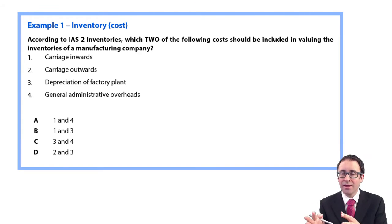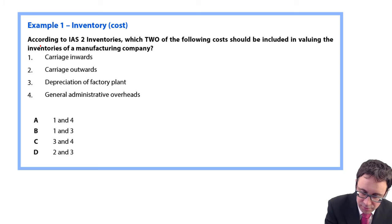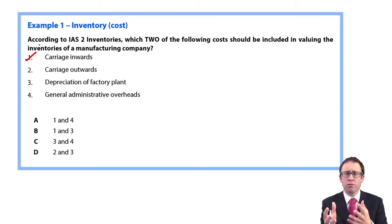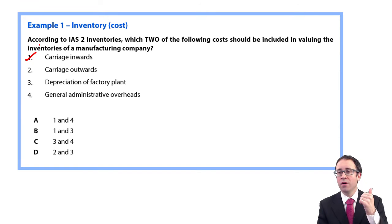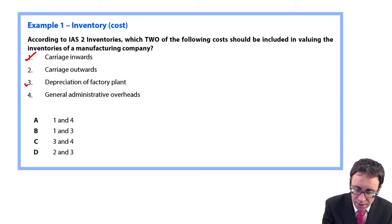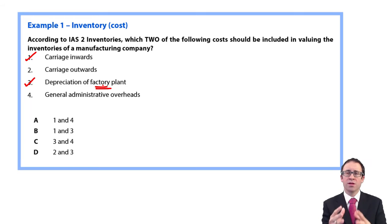So carriage inwards goes into your cost of sales and is part of your cost of production — getting those goods into their location and condition. You have to pay the delivery costs inwards to get them into location. On top of materials and labour costs, you've also got your manufacturing overheads. Any depreciation is an overhead attributable to the factory plant — it's an item of plant and machinery used to produce the goods within the manufacturing company, so that is a manufacturing overhead.